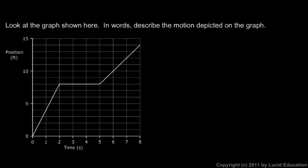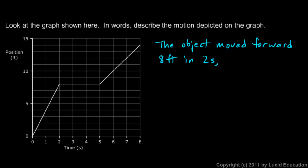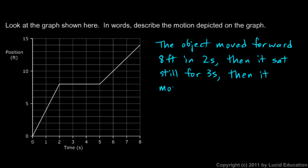During that section of the graph it moved from position 8 up to position 14. In words: the object moved forward eight feet in two seconds, then it sat still for three seconds, then it moved forward six more feet in the last three seconds.